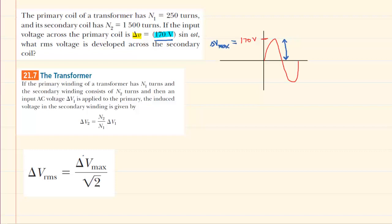And we know there's a relationship between the maximum potential difference and the RMS potential difference. This question is asking us for the RMS potential difference, sometimes called voltage. So if we're going to find the RMS voltage, we're going to need to find the maximum voltage, and we need to find that specifically in the secondary coil. So this 170 volts is for the primary coil. Our job will be to find the value for the secondary.